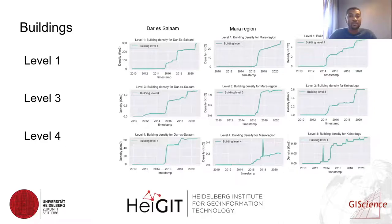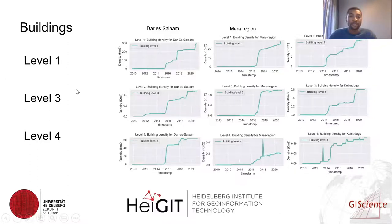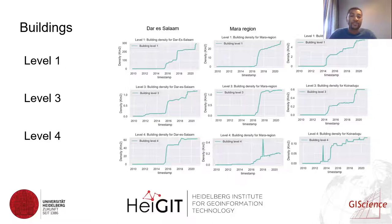For buildings at levels one, three, and four, overall we can see that densities decrease from level one to level four. Surprisingly, in Dar es Salaam we witnessed that elements mapped at level four were more than at level three. We could also see that the timestamps when mapping activities were done seem to be simultaneous in some instances — for example in Dar es Salaam, level one and level three tend to be mapped simultaneously, and then level three tends to be mapped simultaneously with level four.